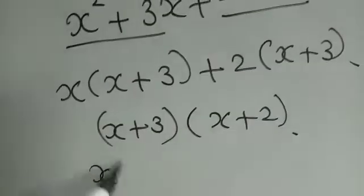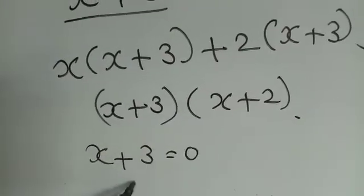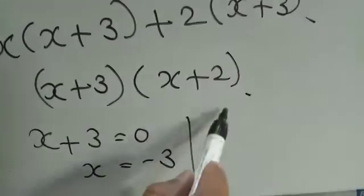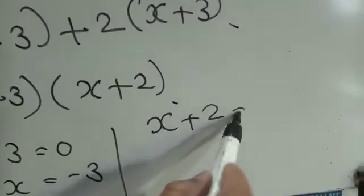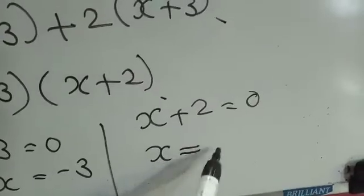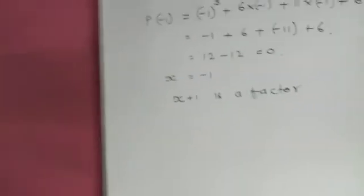To find the zeros, equate each linear polynomial to zero. From (x + 3) = 0, we get x = -3. From (x + 2) = 0, we get x = -2. Combined with our earlier result, all three zeros of the polynomial are x = -1, x = -3, and x = -2.